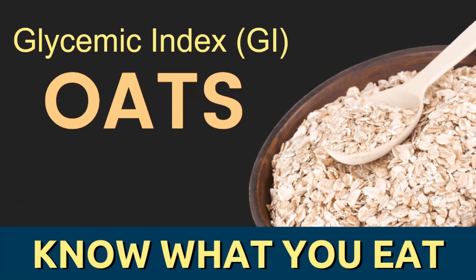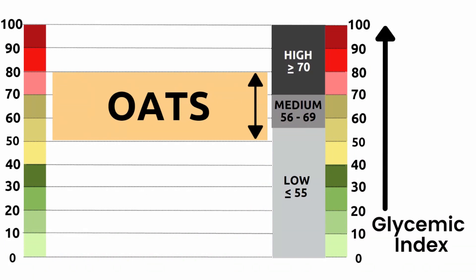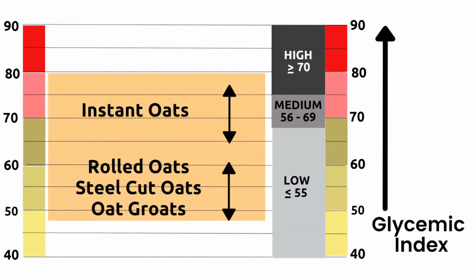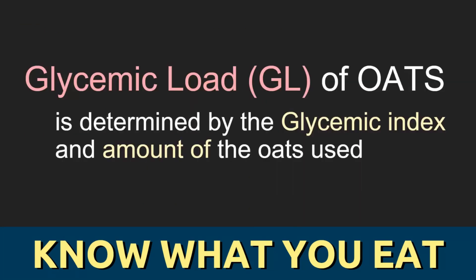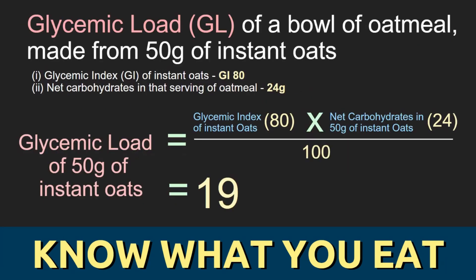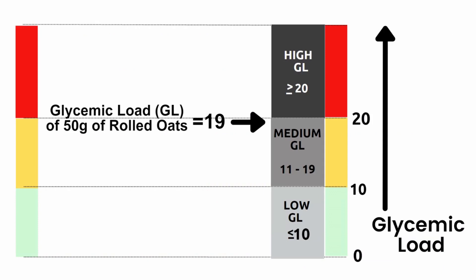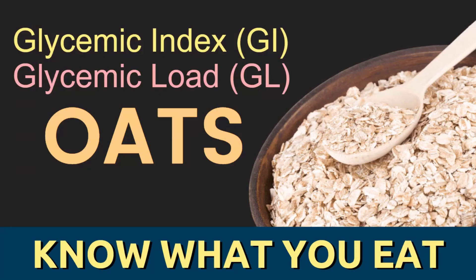So the glycemic index of oats ranges from the 40s to the 70s, with the less processed oats such as steel cut oats having a lower GI range than the more highly processed instant oats. As for the glycemic load of oats, it varies with the glycemic index and the amount of oats used. In this specific example of a serving of oatmeal made from 50 grams of instant oats, we calculated the glycemic load to be around 19, which puts it at the highest end of the medium glycemic load range. Hope you have found this episode of Know What You Eat useful.